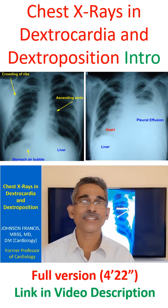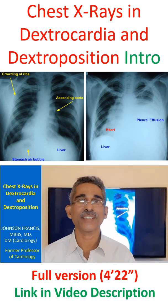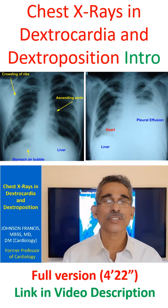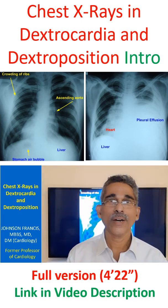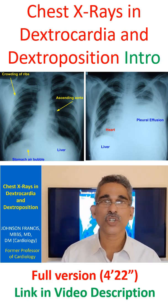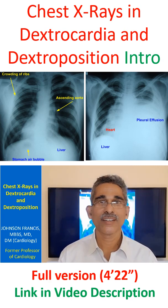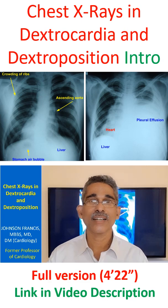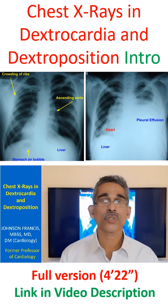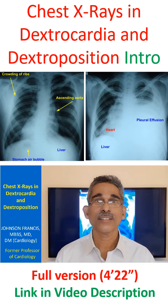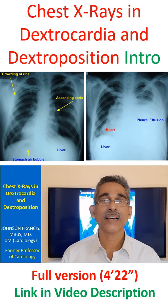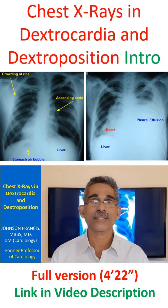I am going to discuss two chest X-rays with abnormal position of the heart within the thoracic cage. One is dextrocardia, another is dextroposition. Dextrocardia is a congenital anomaly while dextroposition most often is acquired, though it could also be part of a congenital anomaly like hypoplastic lung.